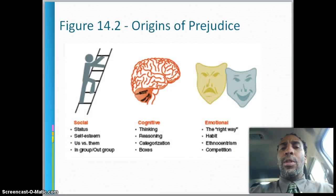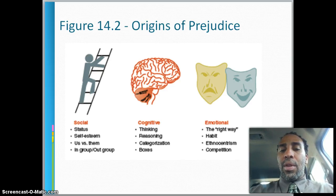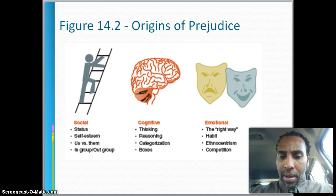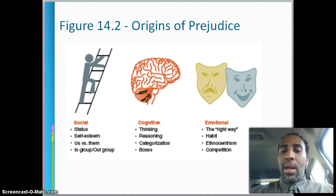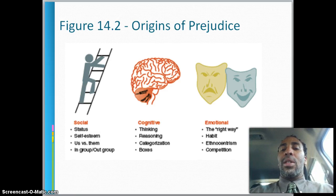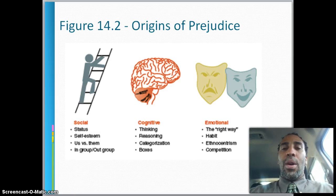In Figure 14.2, you see the origins of prejudice: social — status, self-esteem, us versus them, in-group and out-group; cognitive — thinking, reasoning, categorization, and putting people into boxes; and emotional — the right way, habit, ethnocentrism, and competition. Ethnocentrism is believing that your racial group is better than others.